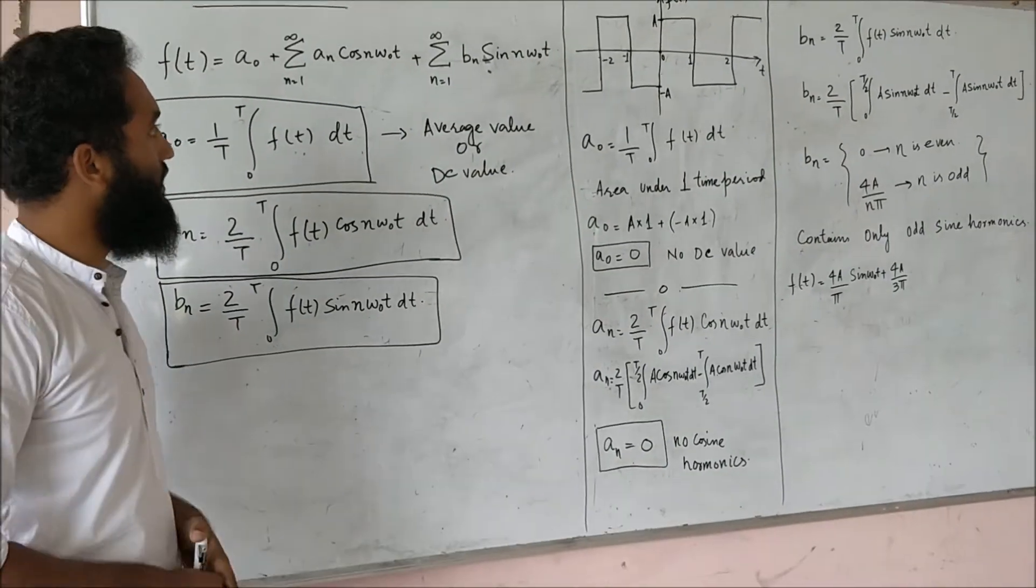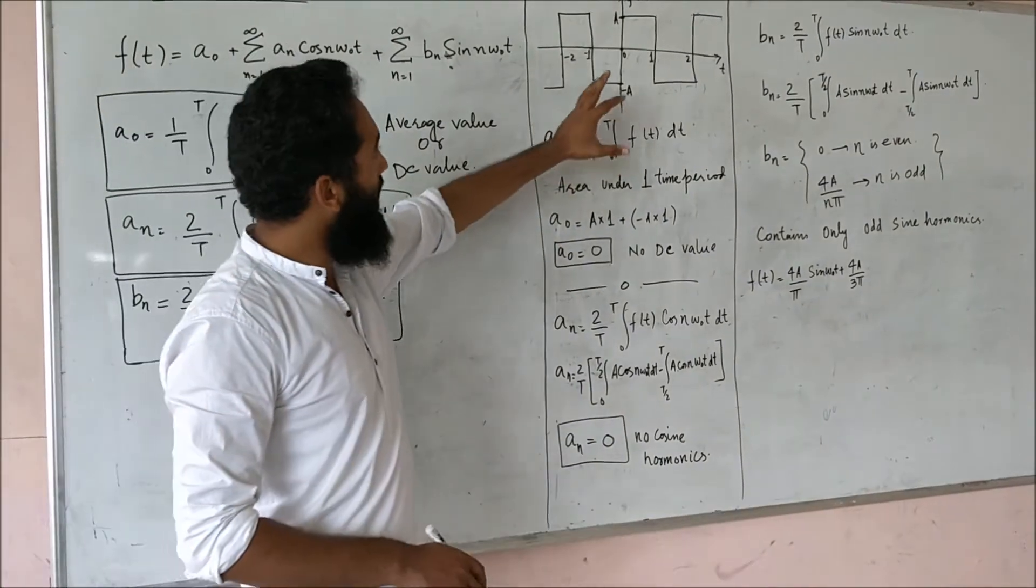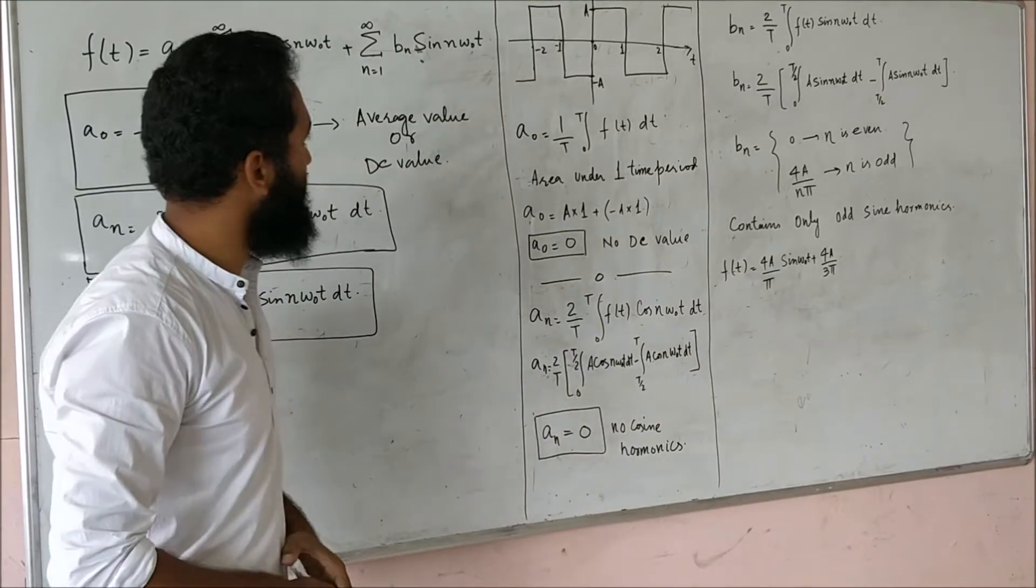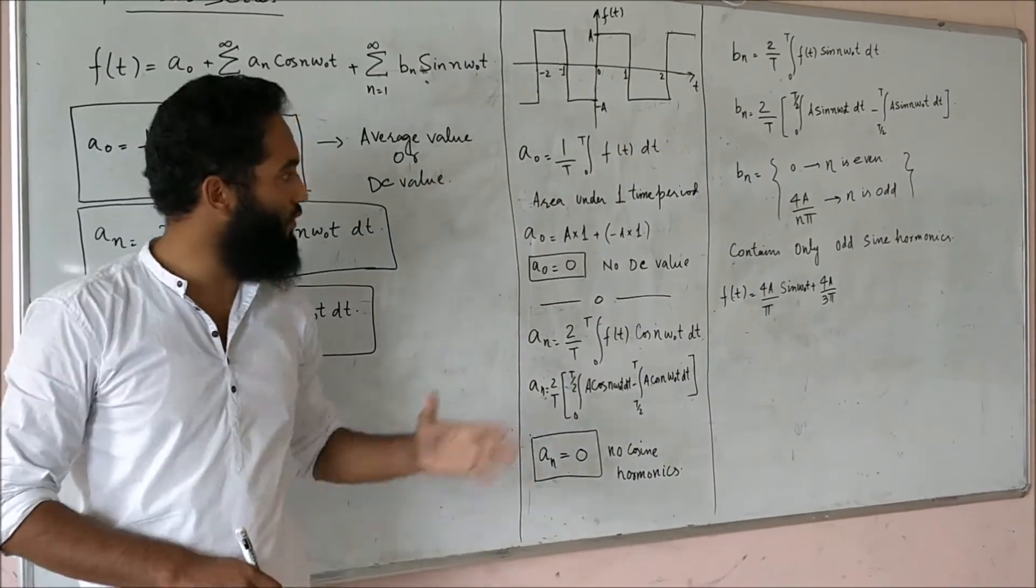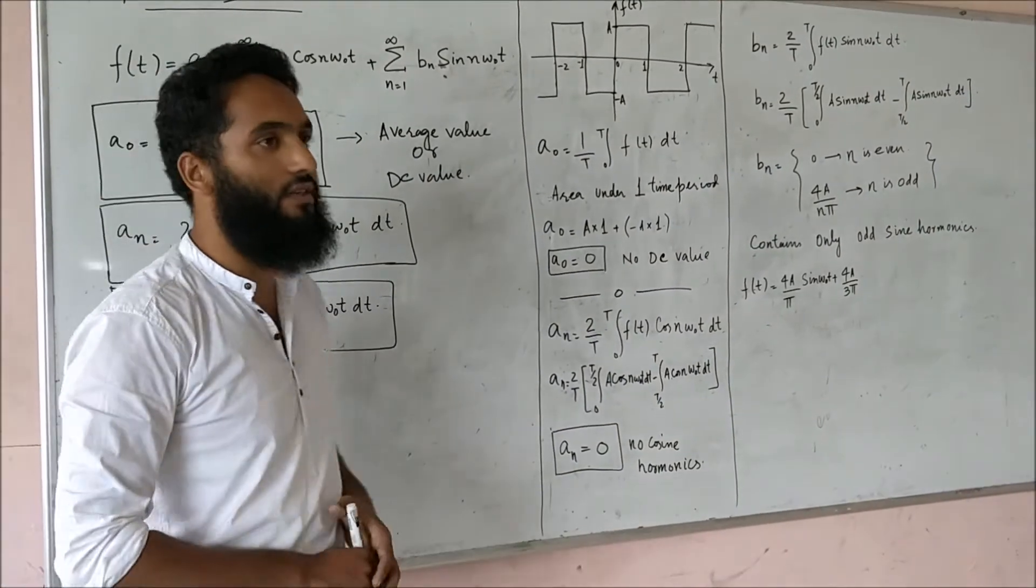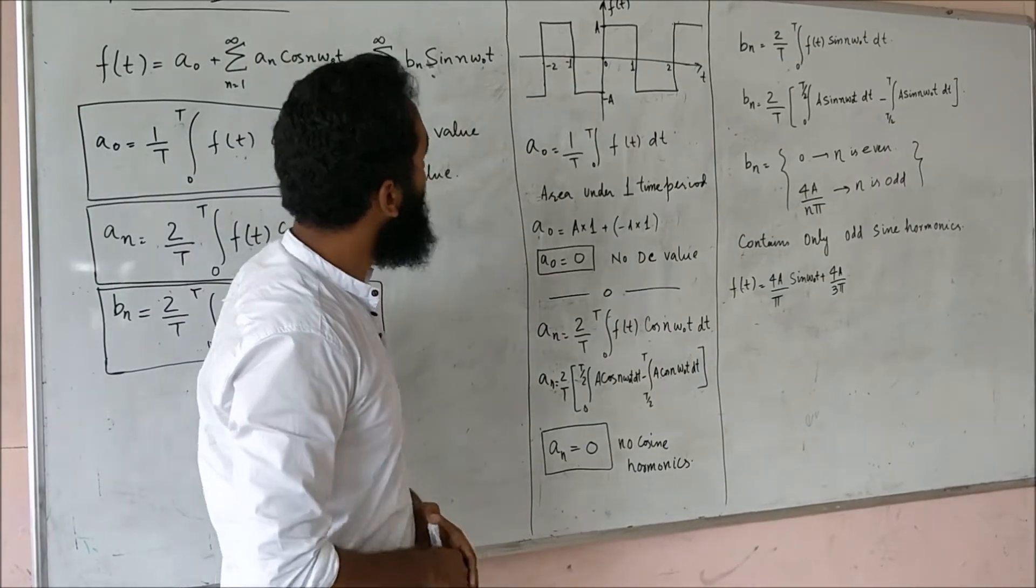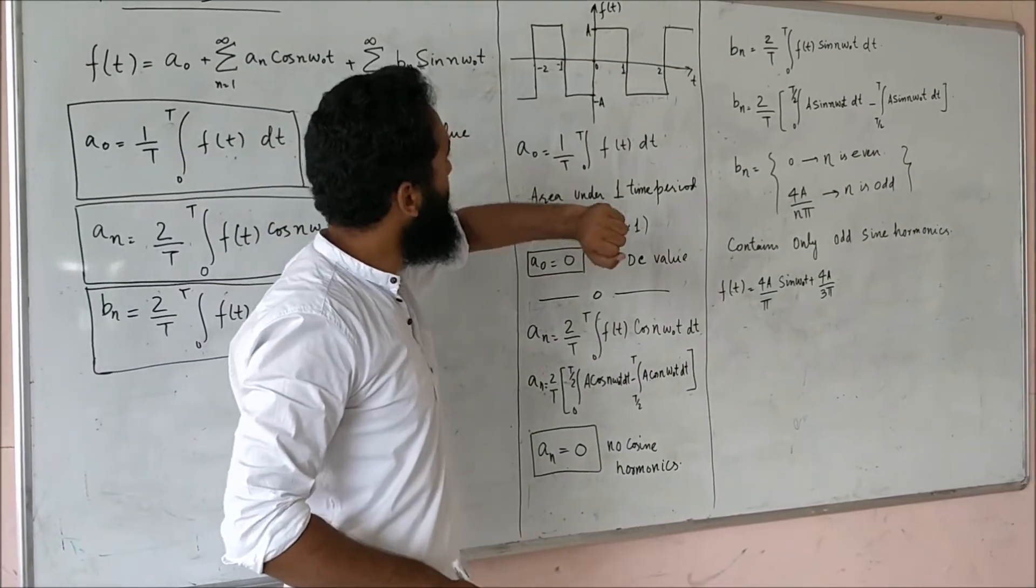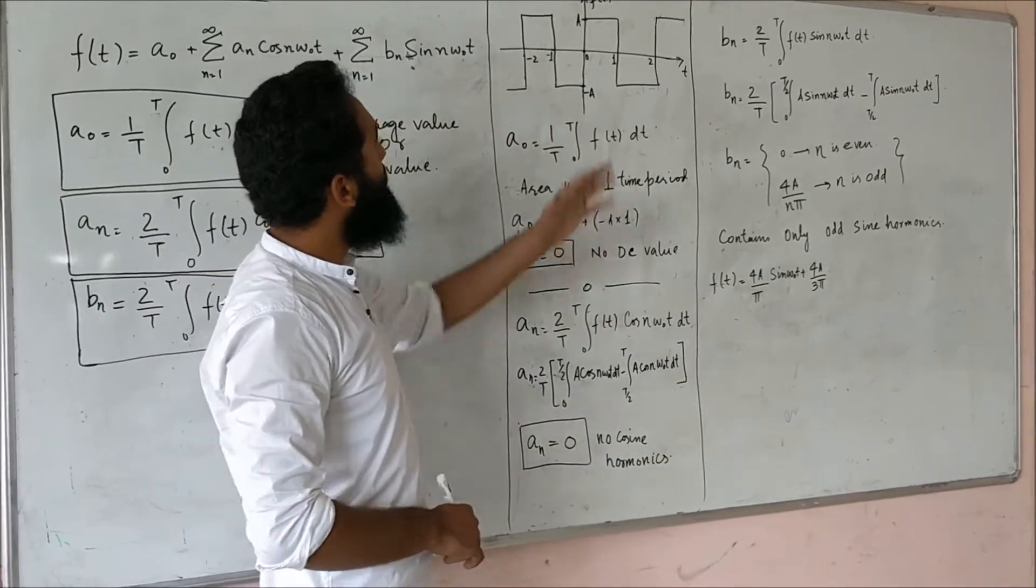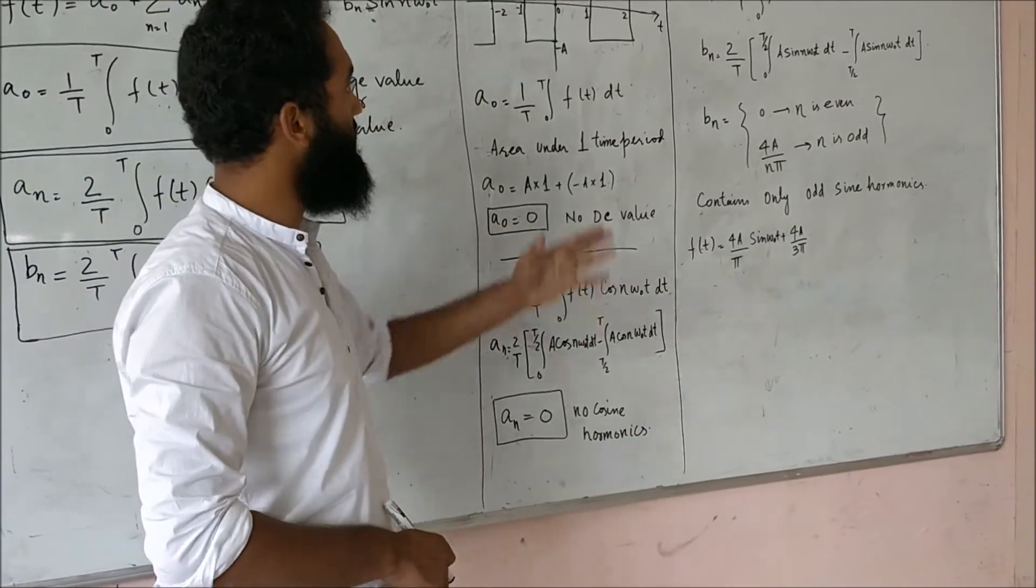Let us kick off the session with this example. In this session I will take this example through the whole lecture and at the end I will prove if Fourier was true or not through a MATLAB program. Let us take this square wave scenario with amplitude A and time period of 2 seconds. In this wave I can find a DC term, cosine harmonics, and sine harmonics.